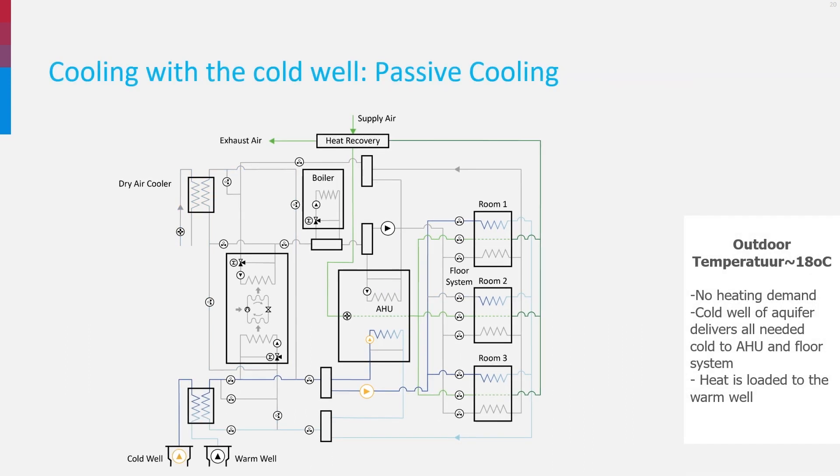When it becomes warmer outside and more cooling is needed, the cold well is used and delivers all needed cold to the air handling unit and the floor cooling system. This is called passive cooling. And by doing so, heat is loaded to the warm well.